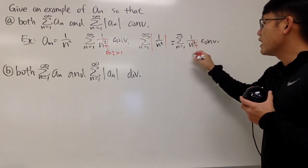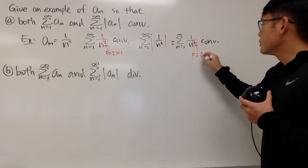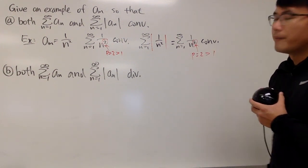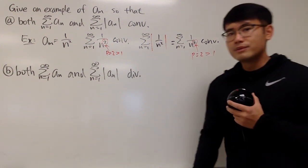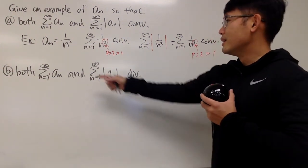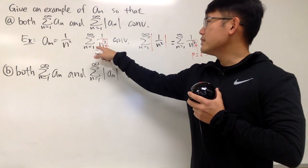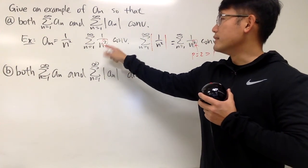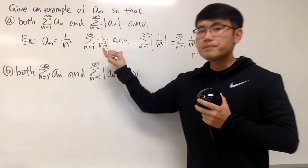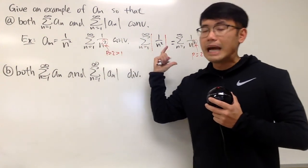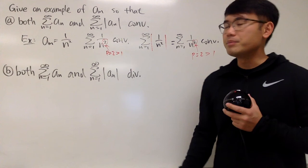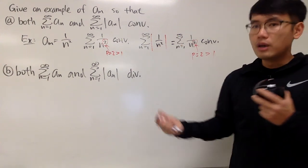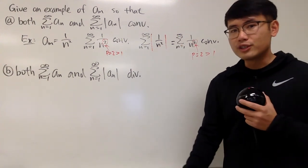So, p = 2 is greater than 1. The series as n goes from 1 to infinity of 1/n² is absolutely convergent, because the absolute value version of that also converges.